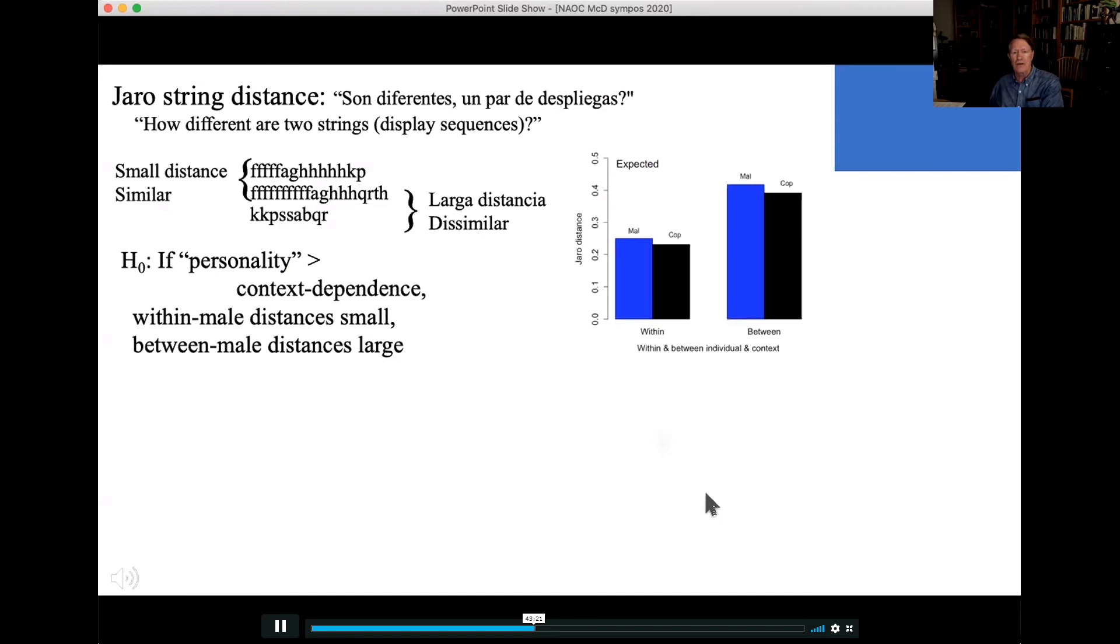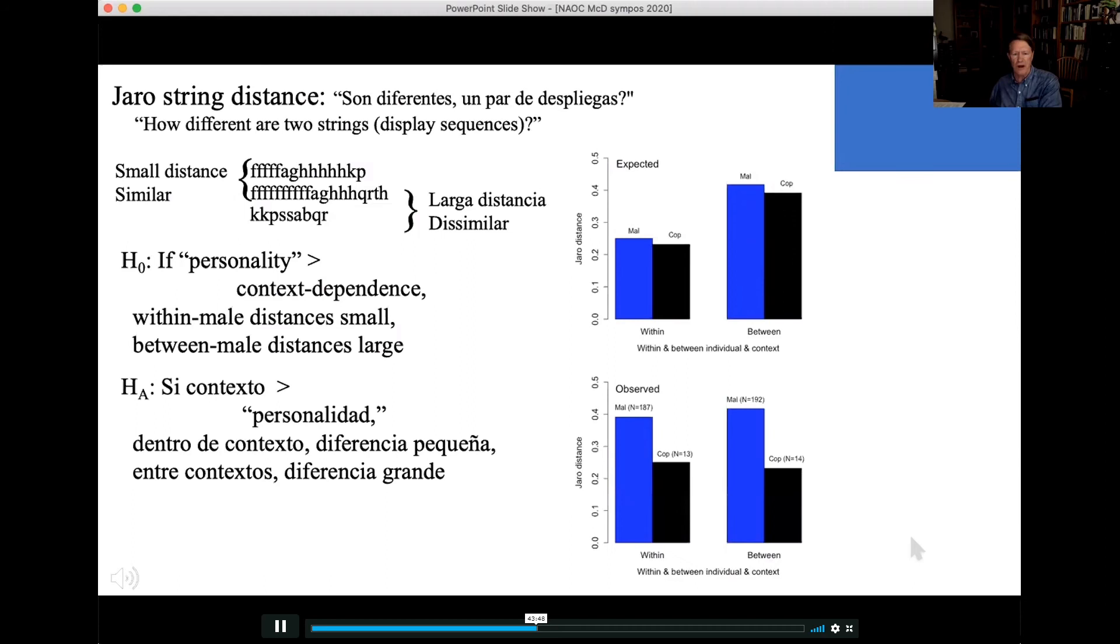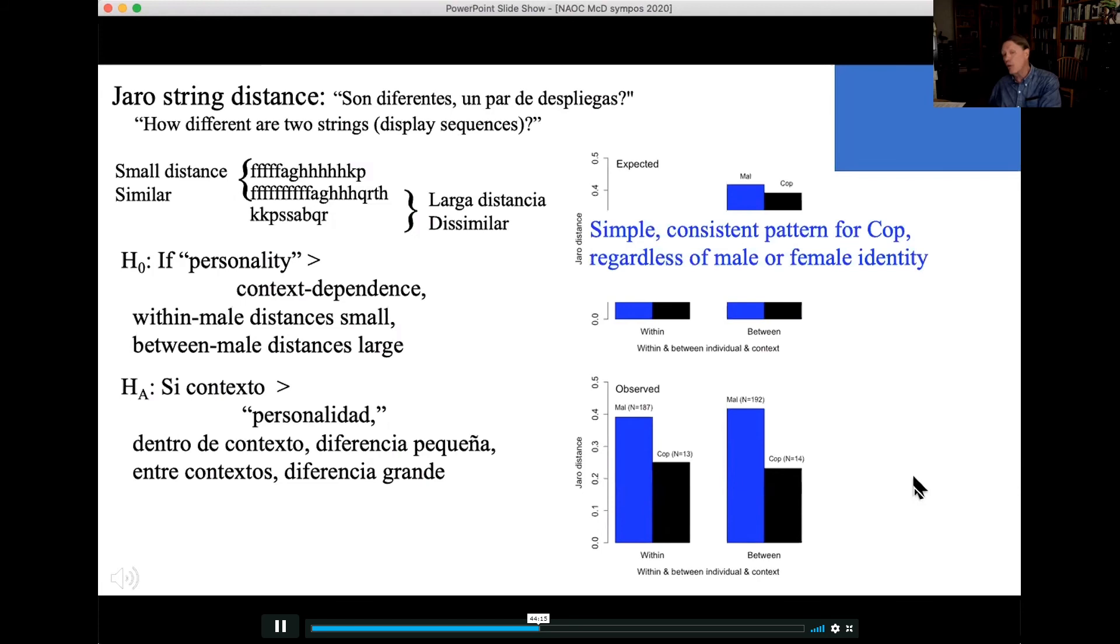So, this is what we might expect. Within males, male and cop bouts should be low Jaro distances, whereas between males, both male and cop bouts should have large Jaro distances. The alternative is if context is more important than personality, then within-context differences should be small, between-context differences should be large. And what we see is exactly that: large differences in Jaro distances between context and small differences within contexts. And most interesting of all to me is that a male's own cop bouts are more similar to those of other males than they are to his own male bouts. So, simple, consistent pattern for cop, regardless of male or female identity. This goes across 14 females. A cop bout is a cop bout is a cop bout across all these females.